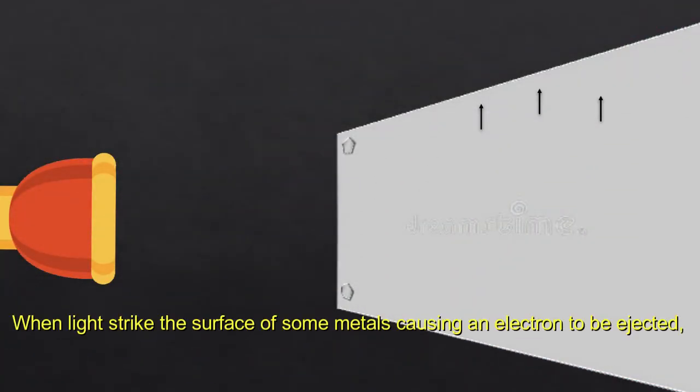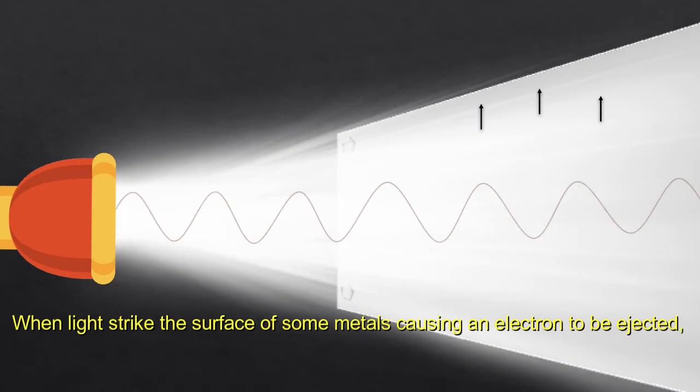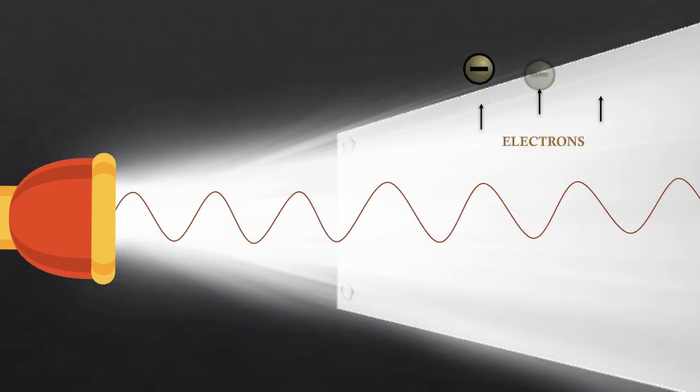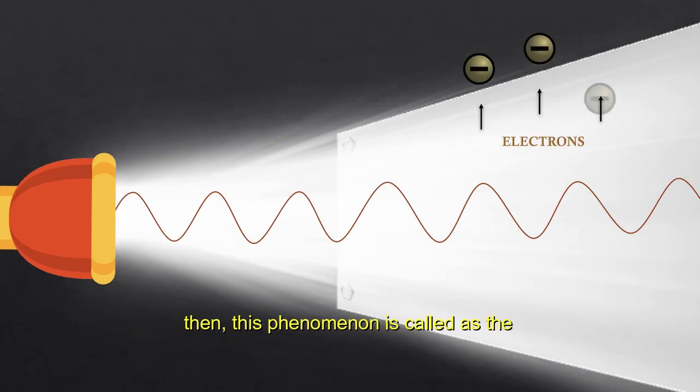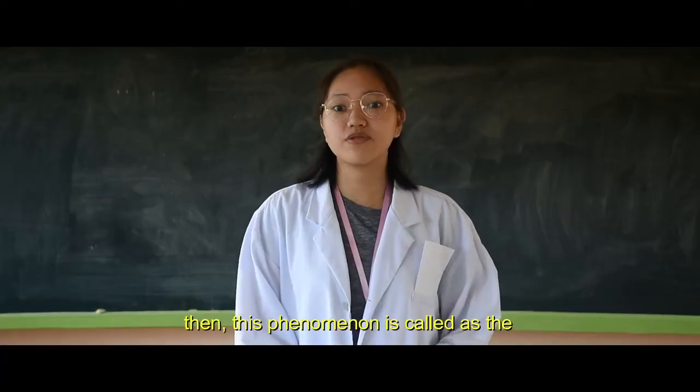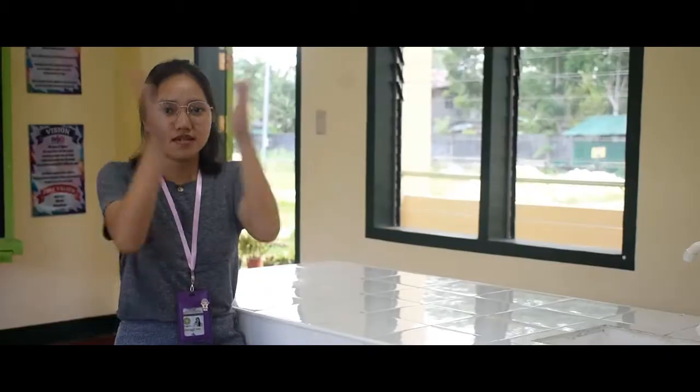When light strikes the surface of some metal and an electron is ejected, this phenomenon is called the photoelectric effect.